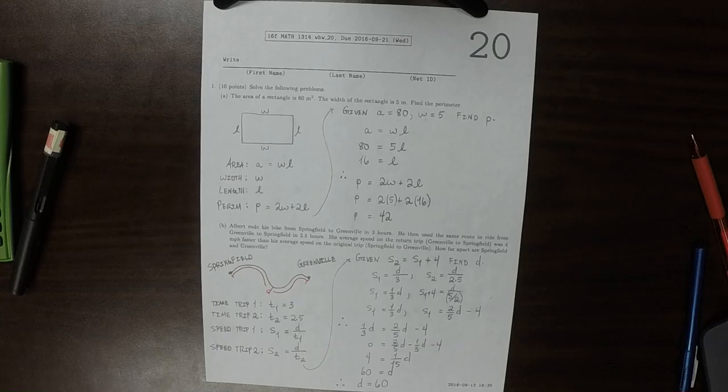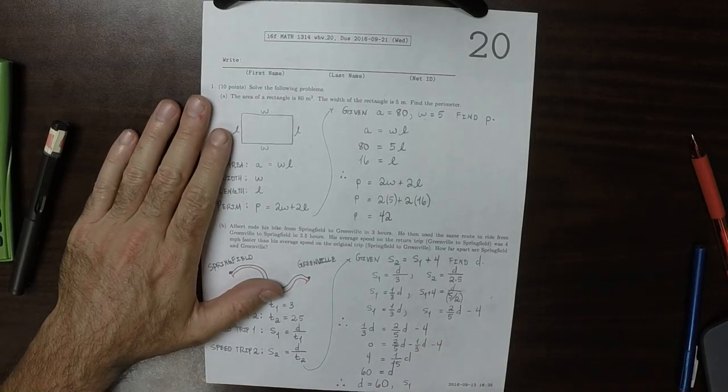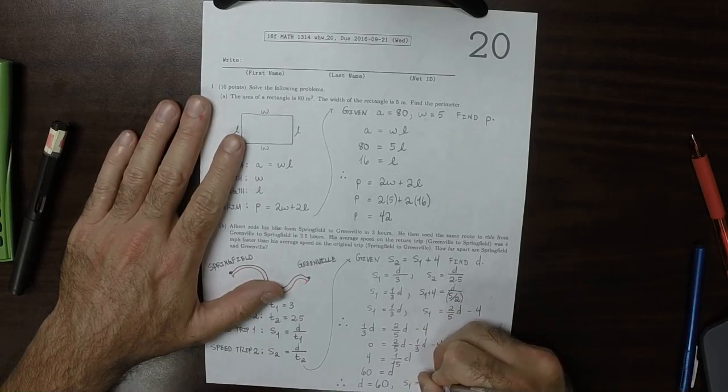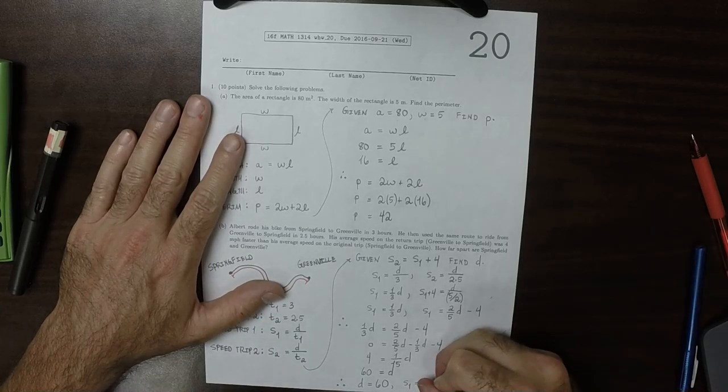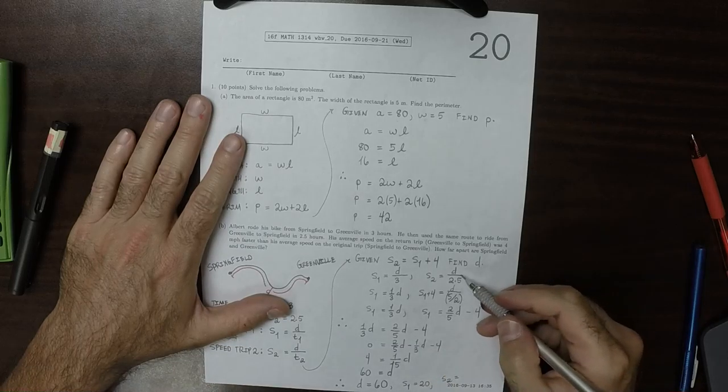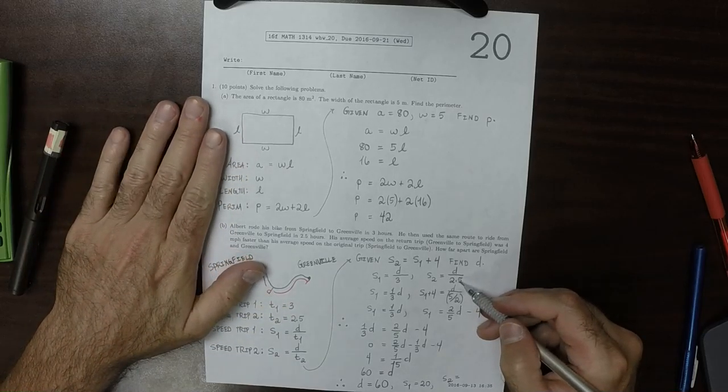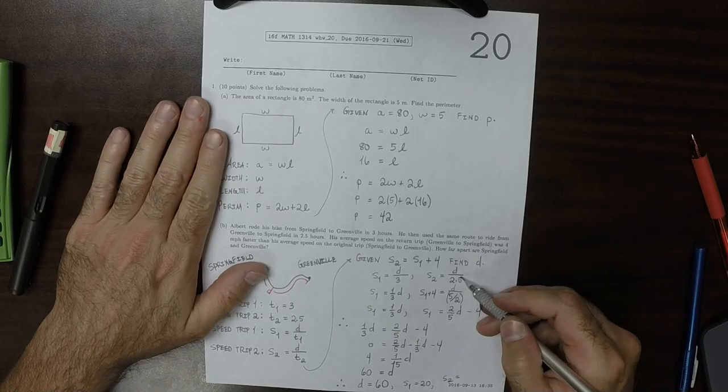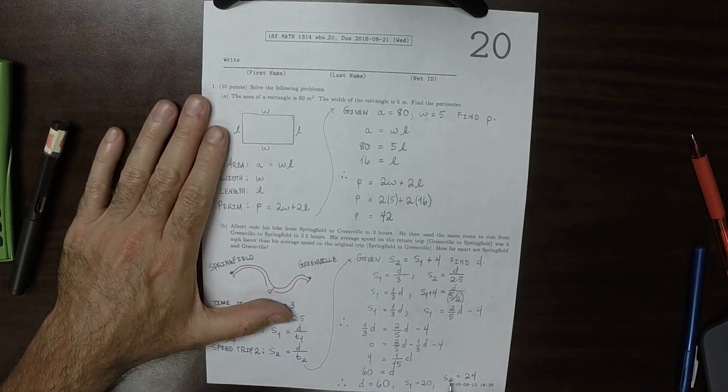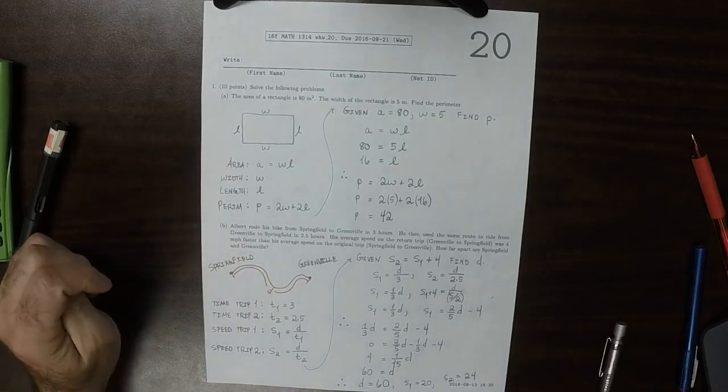It didn't ask for any of these things, but you could go ahead and answer it now. Speed 1, that would be a third of D, so the speed 1 was 20. So that means on the first trip, traveling 20 miles an hour. And then S2 is D over 2.5, that would be D multiplied by 2 fifths, so that would be 24. And notice that S2, 24, is 4 more than S1, which is 20. That's the answer.